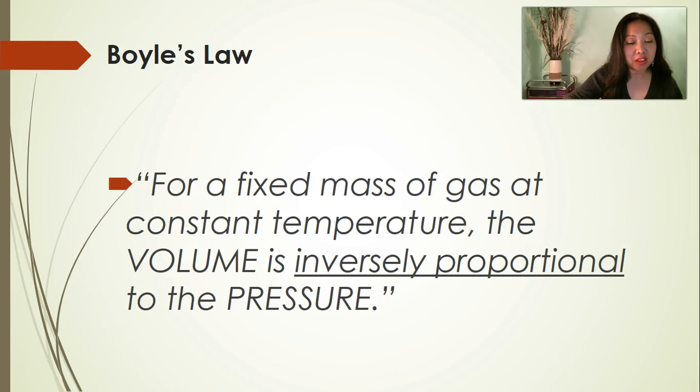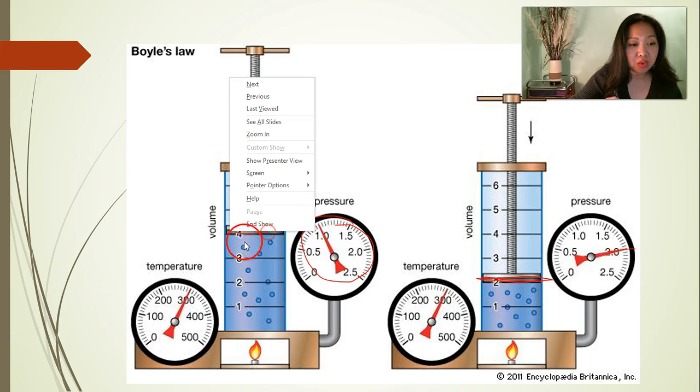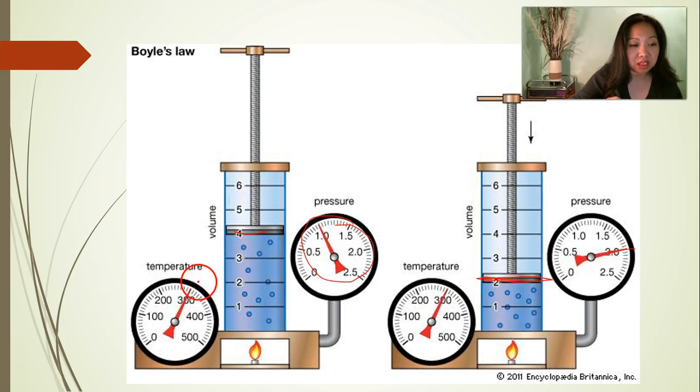Boyle's law states that for a fixed mass of gas at constant temperature, the volume is inversely proportional to the pressure. What does inversely proportional mean? It means that as the pressure of gas increases, the volume of gas decreases. And as the pressure of gas decreases, the volume of gas increases at constant temperature.